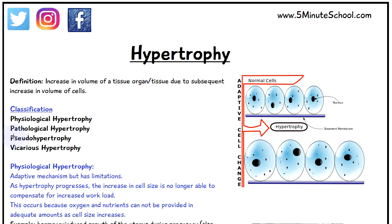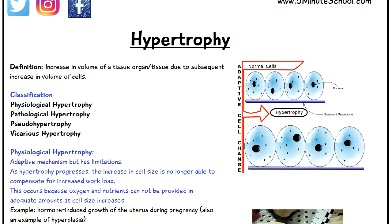We have physiological, pathological, pseudo, and vicarious hypertrophy. Physiological hypertrophy is an adaptive mechanism by the body where cells increase in volume to help compensate for something, and it is a natural occurrence. It does have its limitations, because as the hypertrophy progresses and cells keep increasing in volume, eventually they won't be able to compensate for the amount of work they're being put under. This is because there won't be enough oxygen and nutrients reaching the cells as they get bigger and bigger.